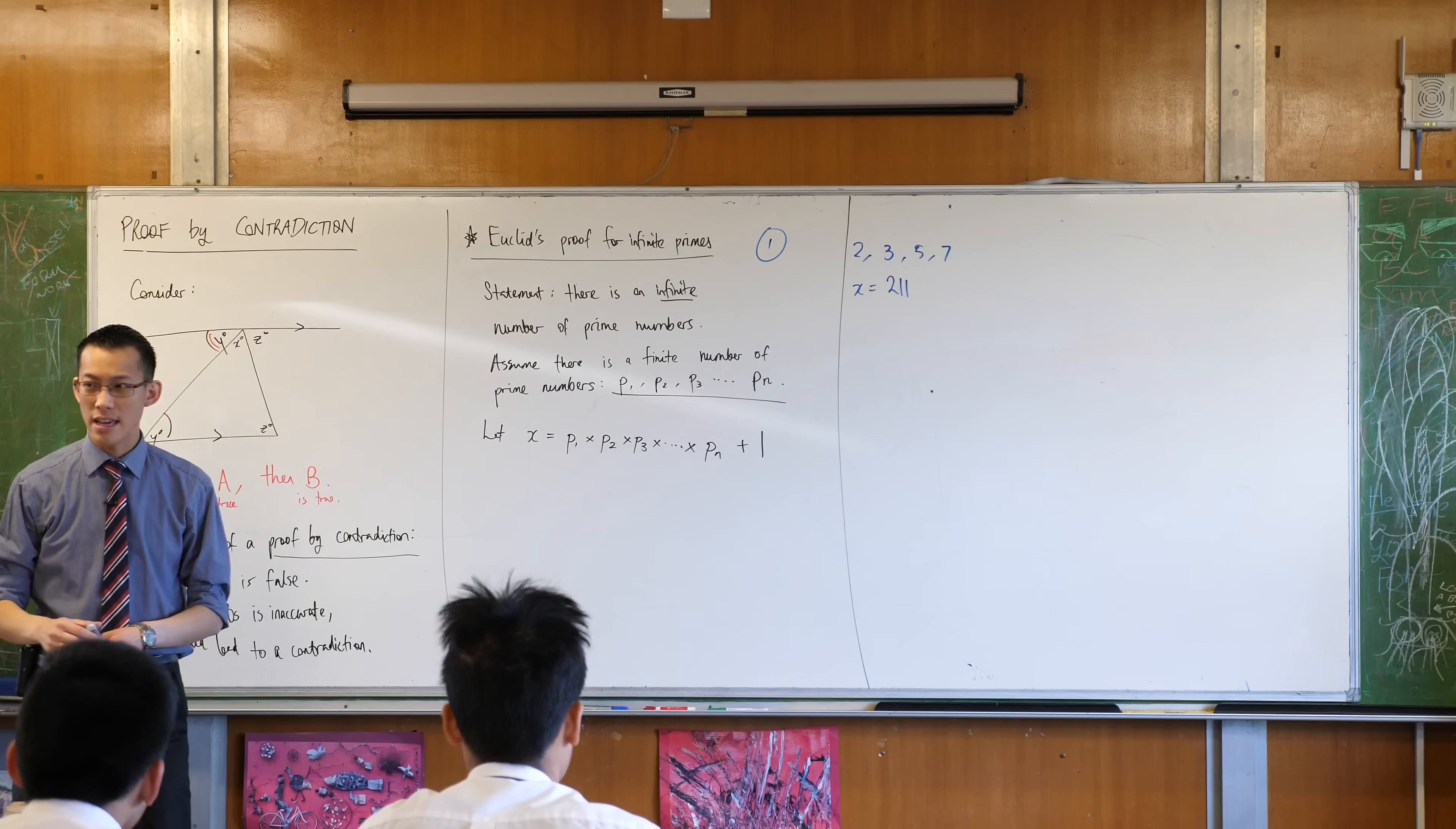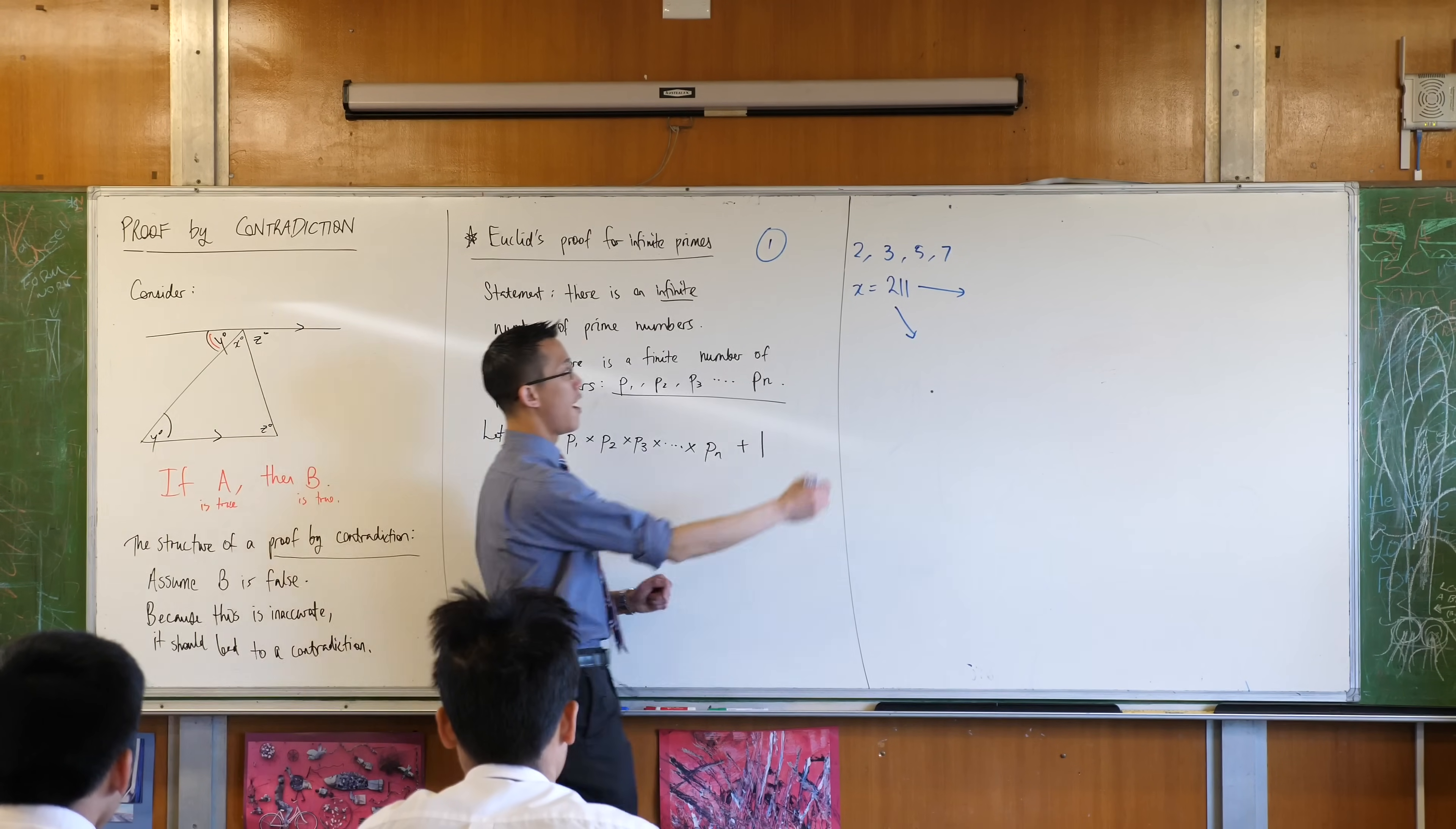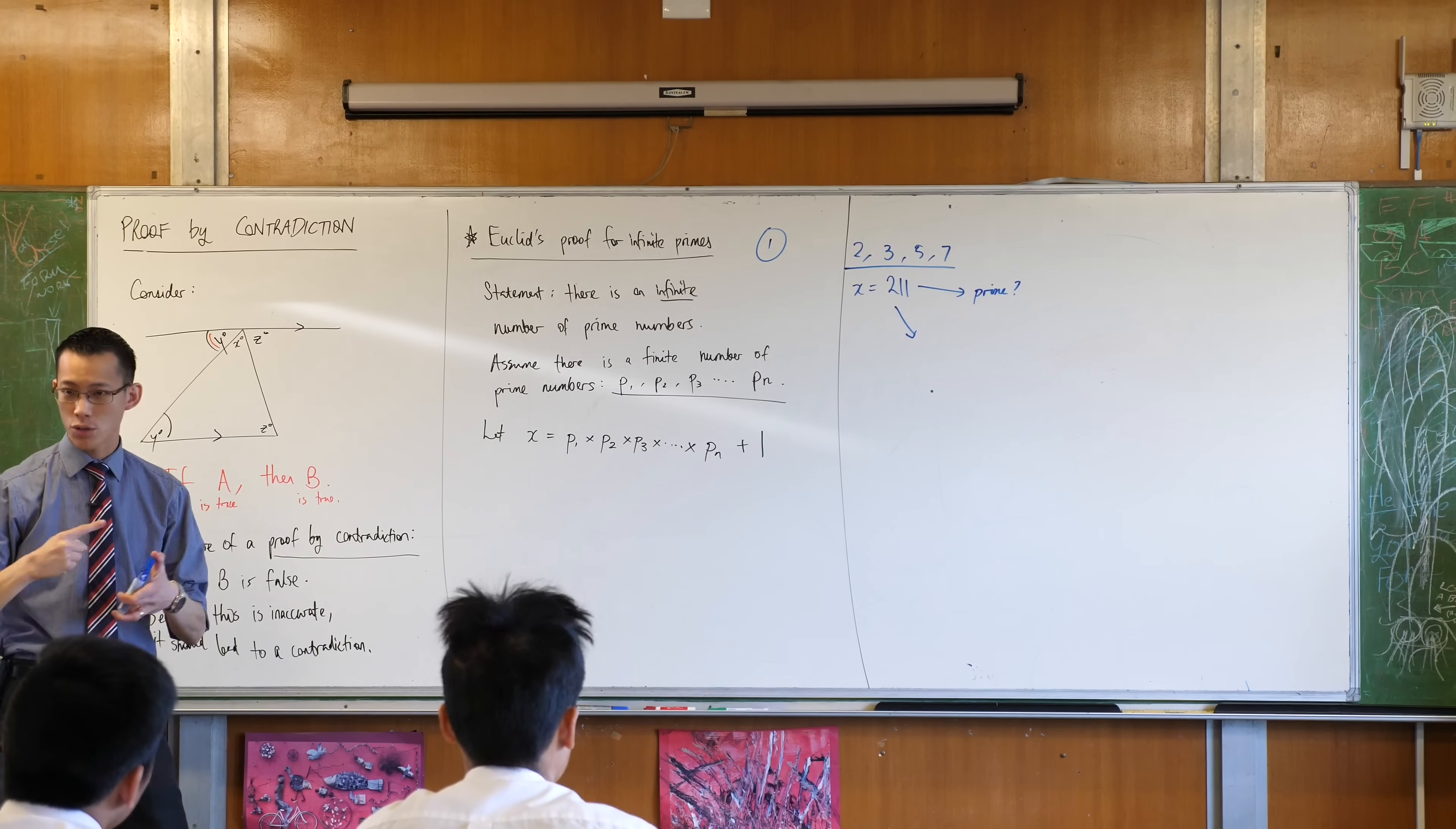So what does that mean about this number? What can you tell me about this number? 211 is either, and this is actually important, it's one of two things. As Emily suggested, maybe it's prime because it doesn't seem to divide by anything on my list. And remember, I said I have all of the primes, right? I said I've got them all, okay? So is it prime? If it's prime, my assumption was wrong. I don't have the complete list. Does that make sense? So I've already come into a problem.